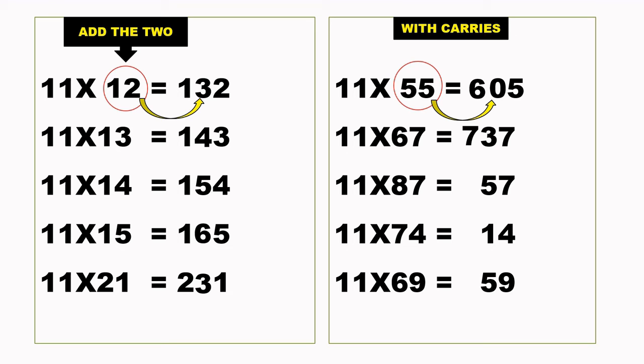11 times 87, our 7 is already down. 7 plus 8 is 15, we put the 5 down, carry 1. 1 plus 8 is 9, so our answer is 957.